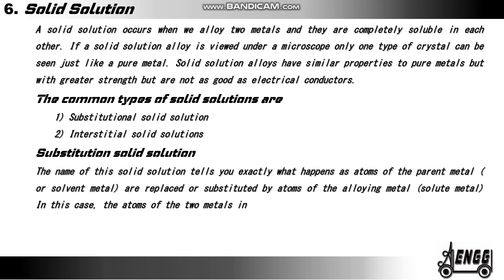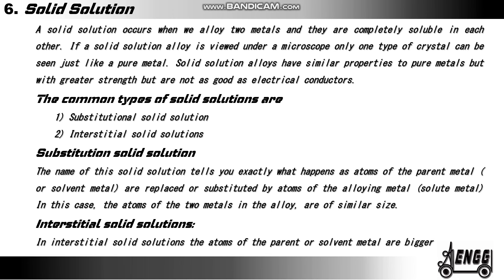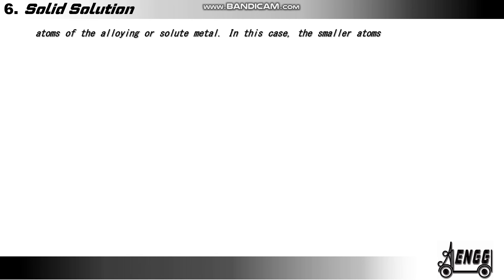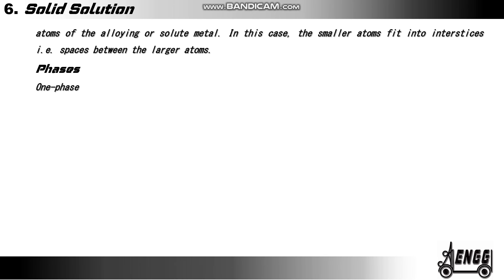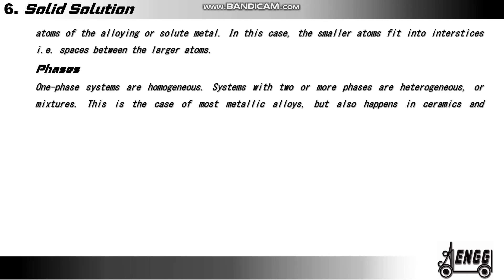In this case, the atoms of the two metals in the alloy are of similar size. Interstitial solid solutions. In interstitial solid solutions, the atoms of the parent or solvent material are bigger than the atoms of the alloying or solute metal. In this case, the smaller atoms fit into interstices, that is the spaces between the larger atoms. One-phase systems are homogeneous. Systems with two or more phases are heterogeneous or mixtures. This is the case of most metallic alloys but also happens in ceramics and polymers.